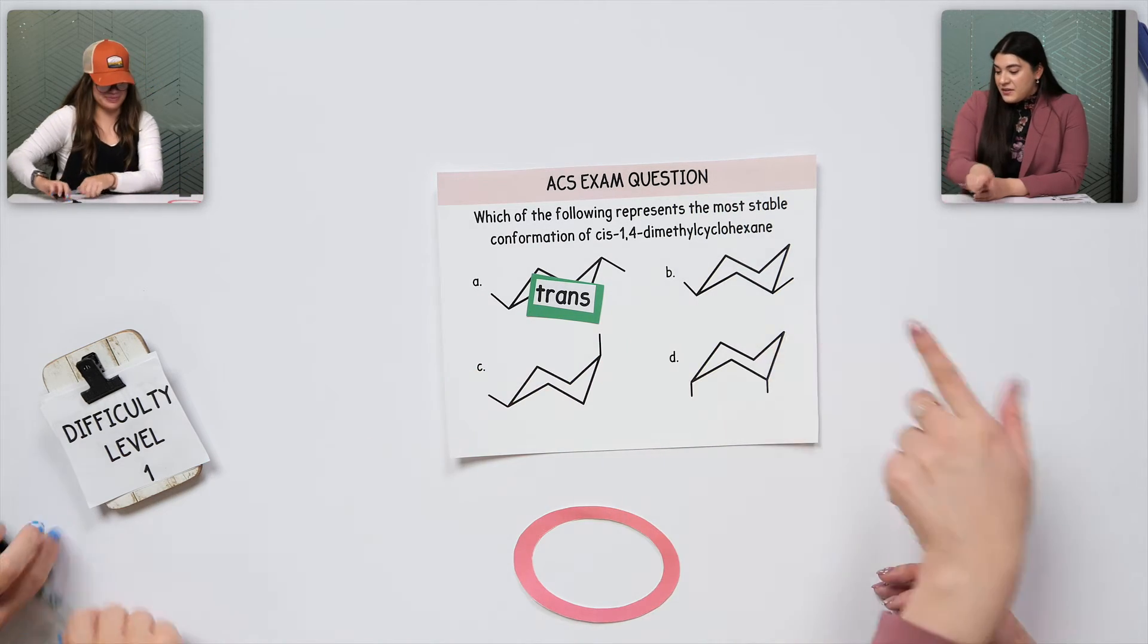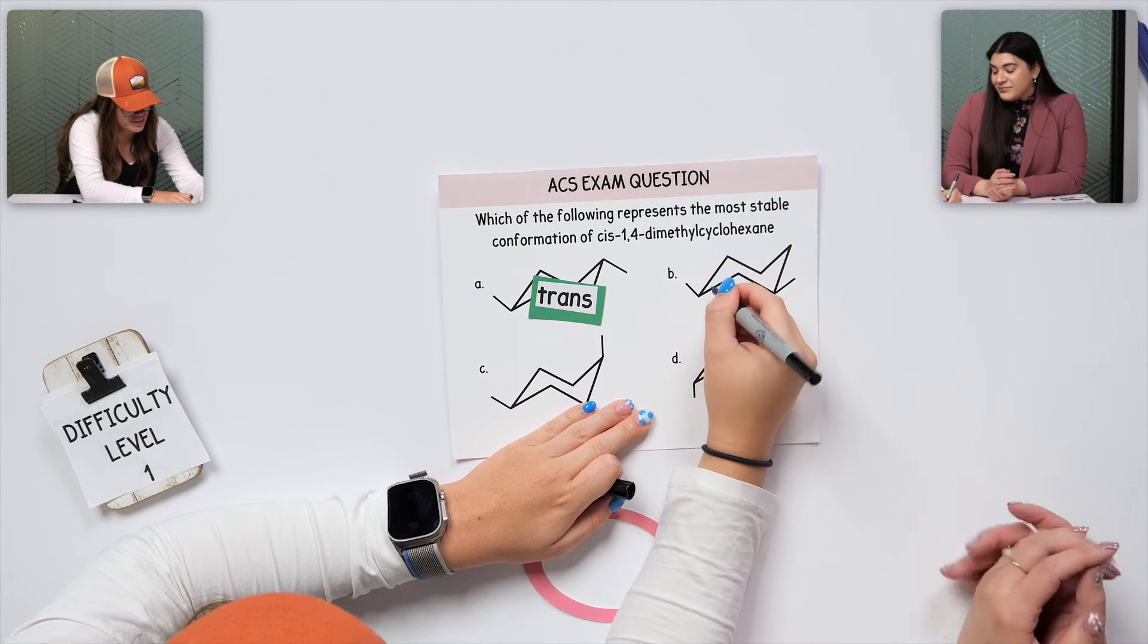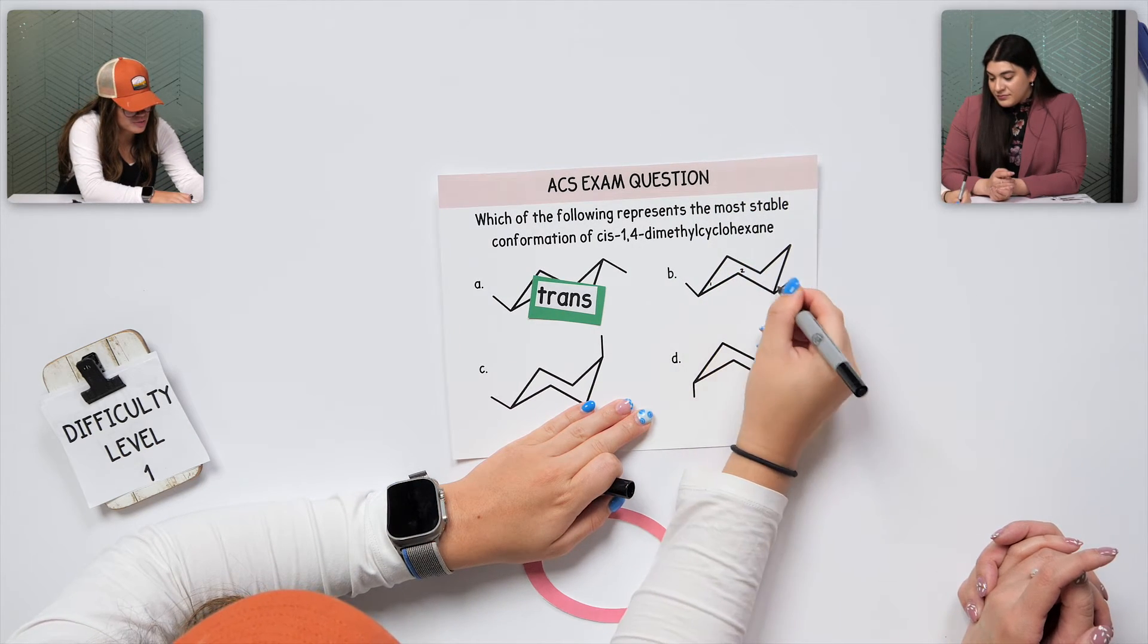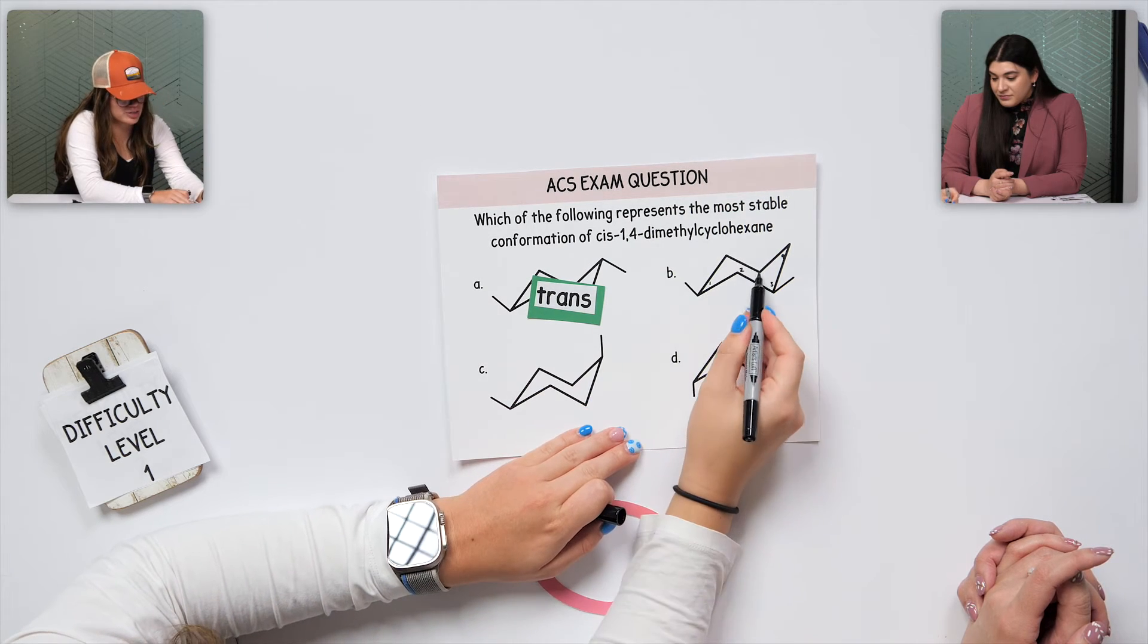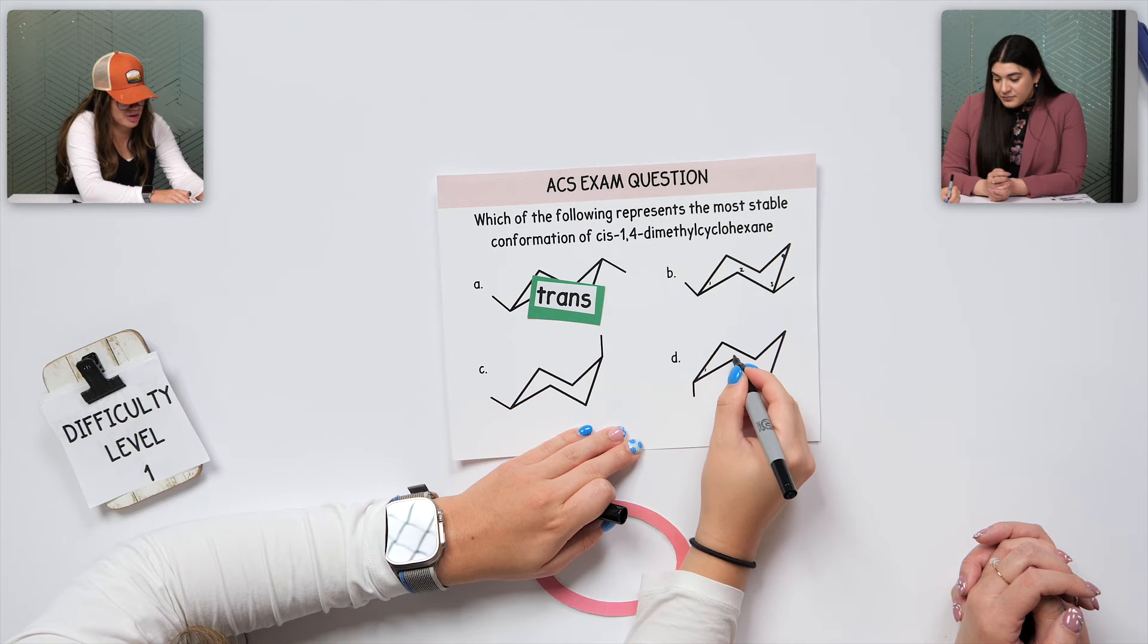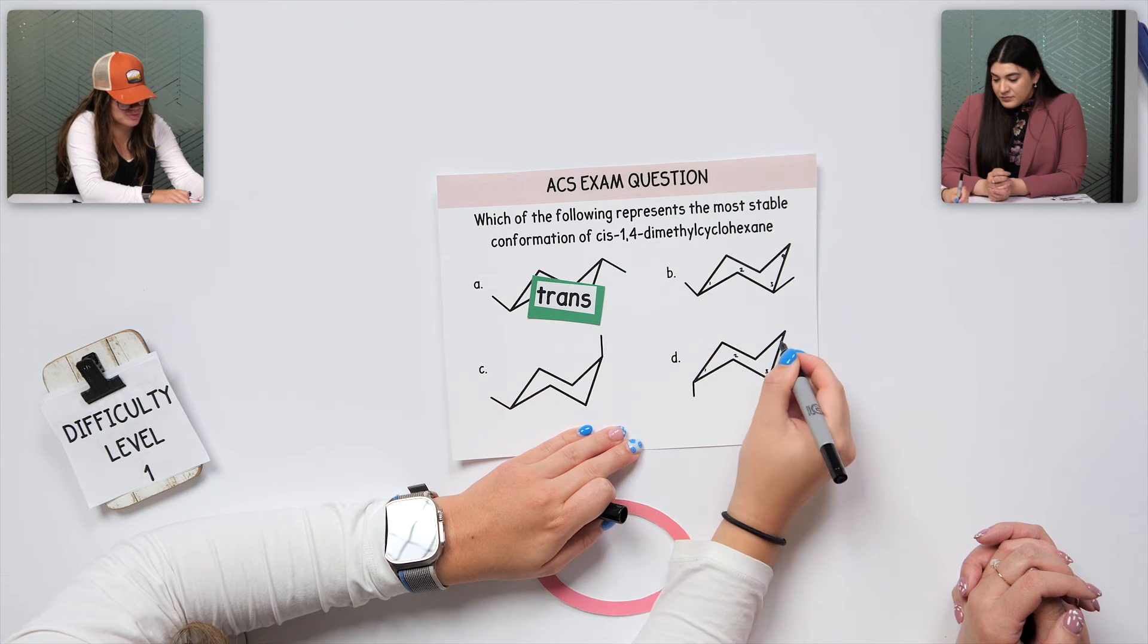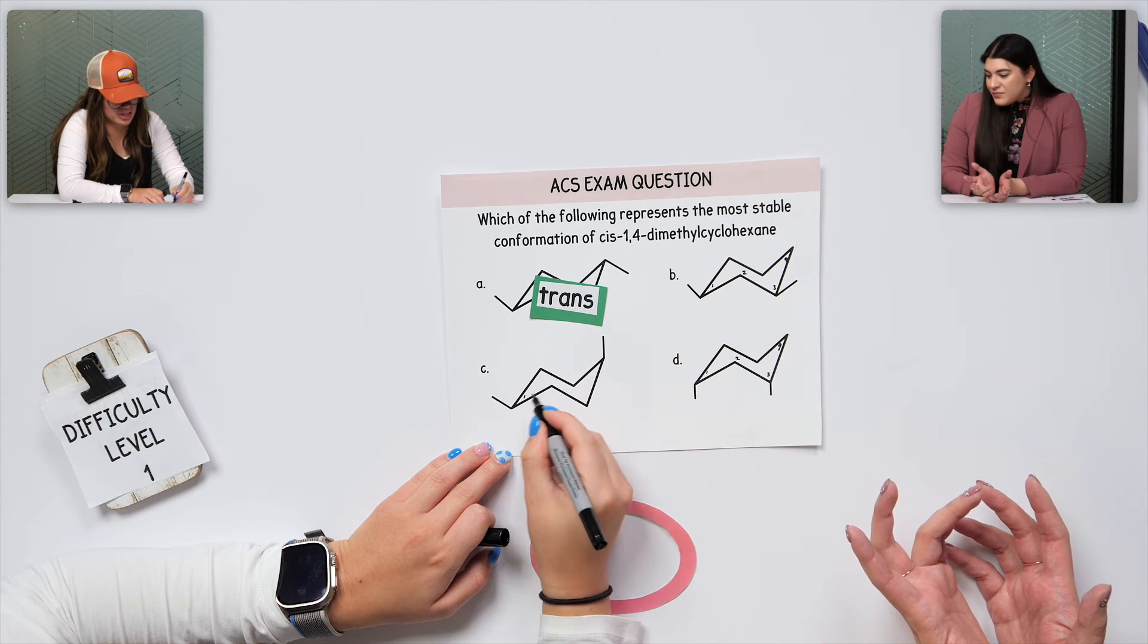So why don't I grab a pen and then we can start here and just say 1,2,3,4. 1,2,3. Yeah, I'll stop there. Because it'll technically go 5,6. Exactly. Okay. Yeah. And then, does it matter the direction I go? I always kind of get confused by that. That's mainly with the chair flip. Okay. That's why it matters.